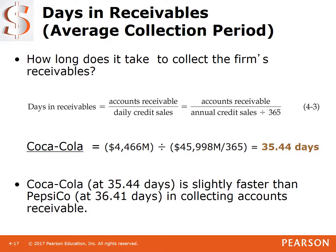First, calculate the denominator: $45,998 divided by 365, which equals approximately $126 million per day in sales. Then divide that into accounts receivable, and that tells you how many days on average it takes to collect accounts receivables from the day of sale to final collection — 35.44 days.